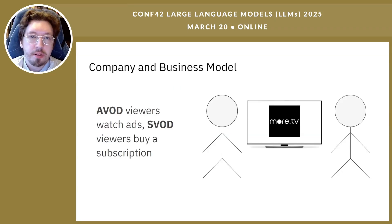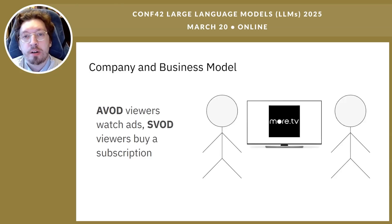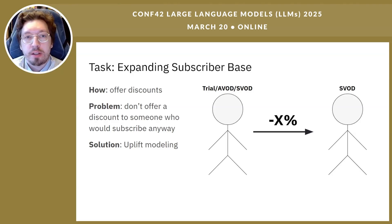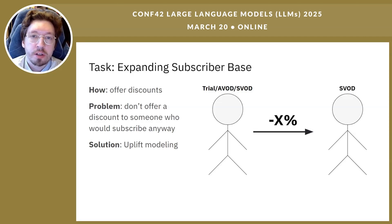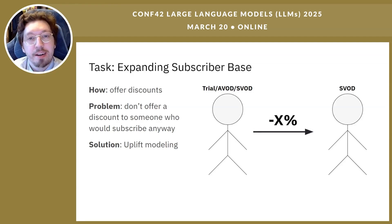A brief overview of our company: MoDiTV is an online video service where users can buy a subscription and renew it monthly, or opt to watch ads instead of subscribing. In the ad scenario, we earn revenue as an advertising platform. Our goal is to grow our subscription base by offering users a discount. The logic is simple — it's better to earn somewhat less from a user if that secures a recurring payment that is still more valuable than advertising revenue. However, the challenge is identifying users who would have subscribed without a discount, so we don't lose profit unnecessarily.